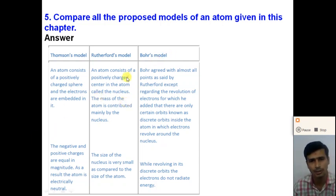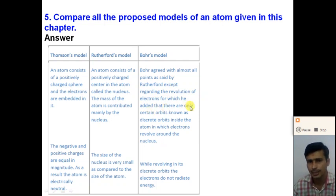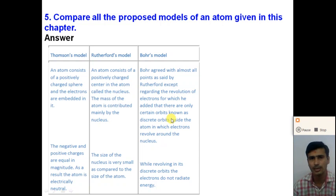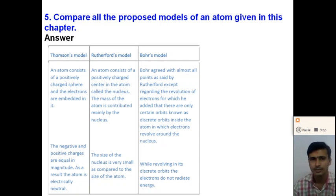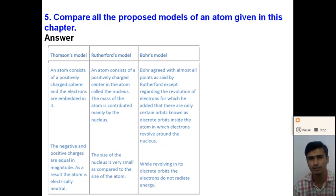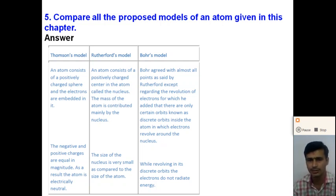Third is Bohr's model. Bohr agreed with almost all the points stated by Rutherford, except regarding the revolution of the electrons. Bohr added that there are only certain orbits — known as discrete or stationary orbits — inside the atom in which electrons revolve. Bohr also stated that while electrons revolve in a stationary orbit, they do not radiate energy.